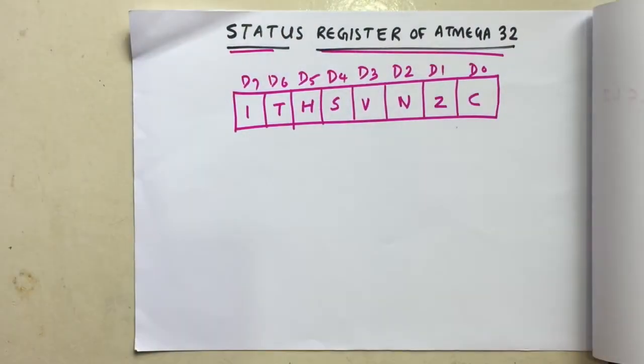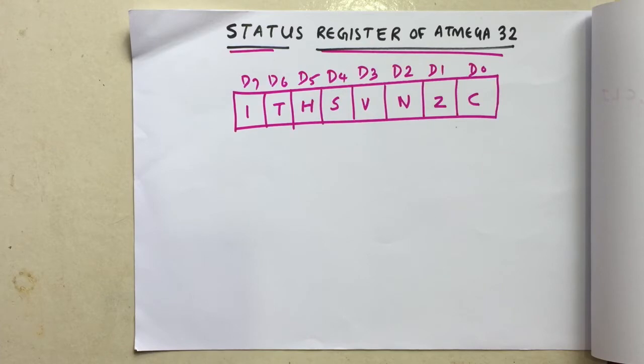Hi all, today we will study the status register of ATMEGA32. The ATMEGA32 status register is 8 bits.